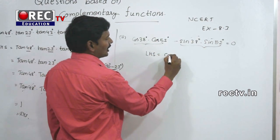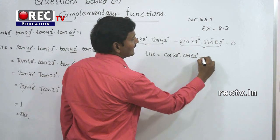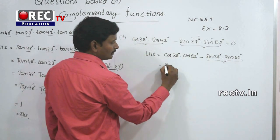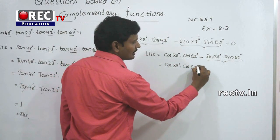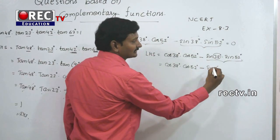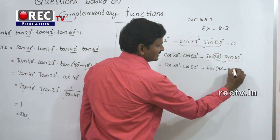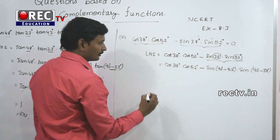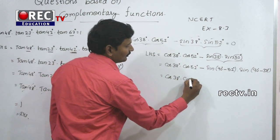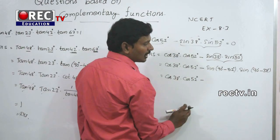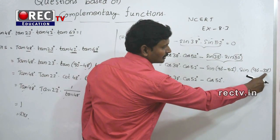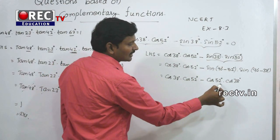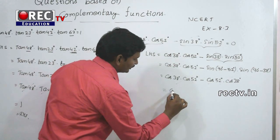LHS = cos38° × cos52° - sin38° × sin52°. We can write sin38° as sin(90° - 52°) = cos52°. So LHS becomes cos38° × cos52° - cos52° × cos52°. Wait — both terms become equal and cancel, giving 0, which equals RHS.